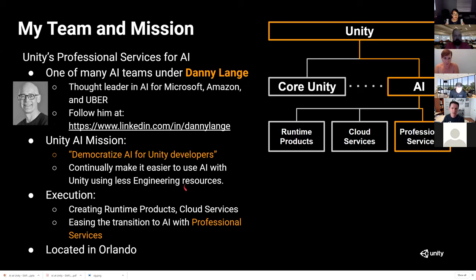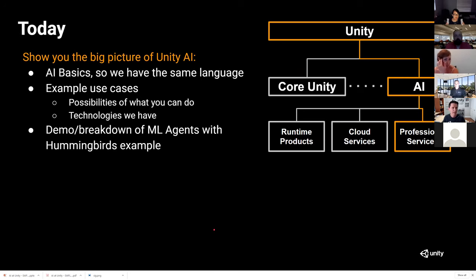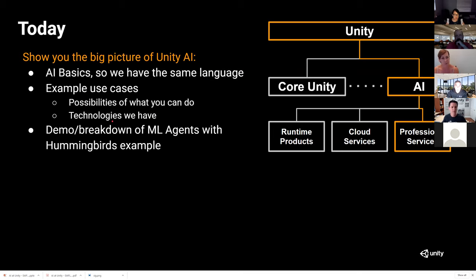We execute on that mission through three pieces of the organization: runtime products that go into Unity or come as packages, cloud services for scaling, and professional services — which is my team. Our team helps companies transition onto AI because some of the products aren't there yet and many people don't know how to use AI well. Today I'll show a big picture of Unity AI, cover AI basics, example use cases, technologies, and we'll look at ML Agents specifically with Hummingbirds.